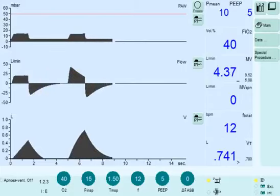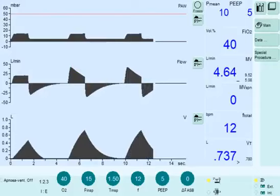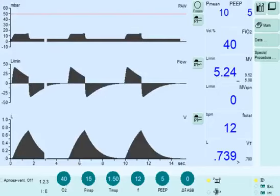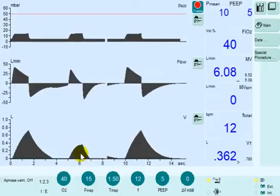Now let's decrease the compliance and see the difference. So if the compliance is decreased, the same pressure results in a lower tidal volume, which is similar to the case of increased resistance.